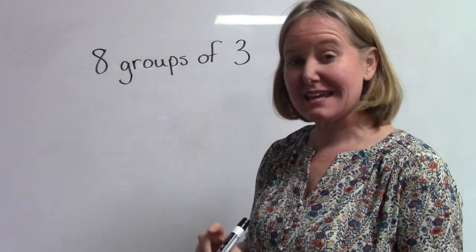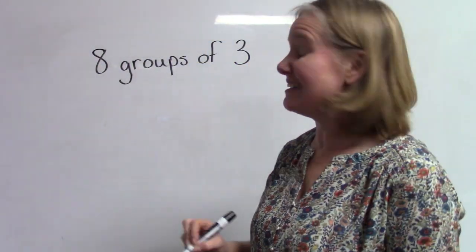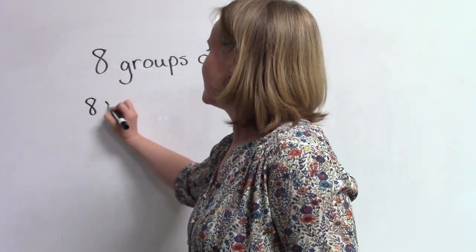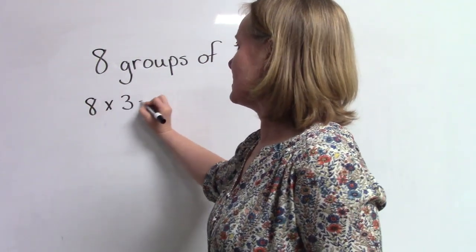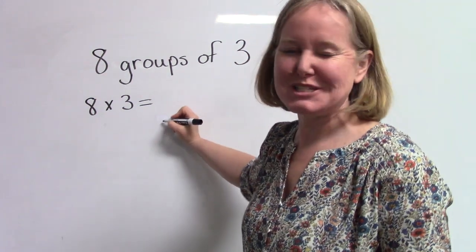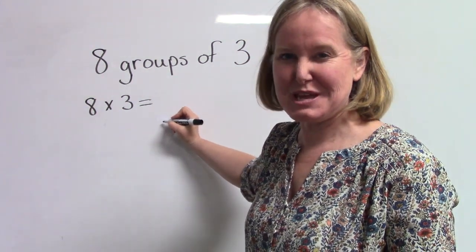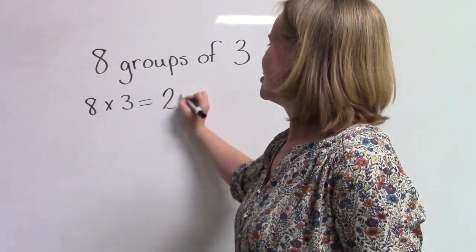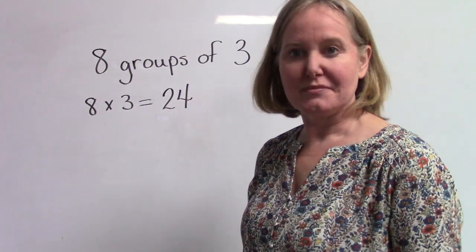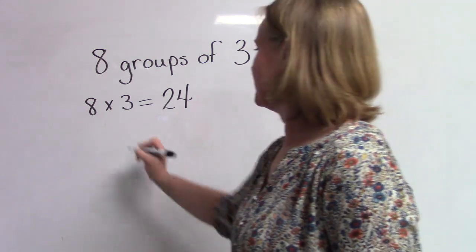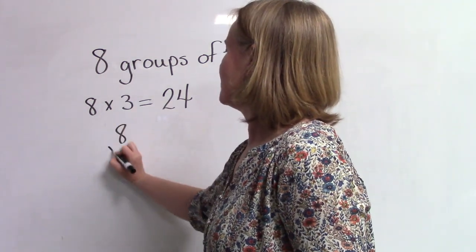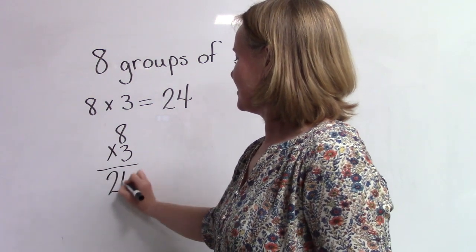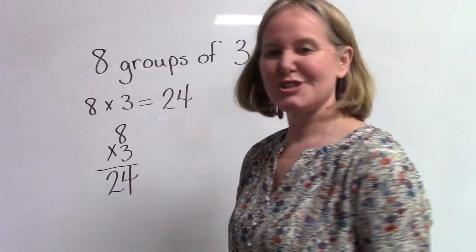Eight groups of three can be written in a couple of different ways. We can say eight groups of three equals — do you remember what eight groups of three equaled? You're right, it is twenty-four. We could also write it this way: eight groups of three equals twenty-four.